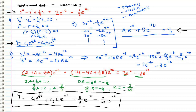Now that we're getting the hang of this, in the next video we are going to look at more complicated non-homogeneous parts and figure out their particular solution forms. We'll also look at what happens when a term in the particular solution is linearly dependent with a term in the homogeneous solution. Thanks for watching — see you guys later.